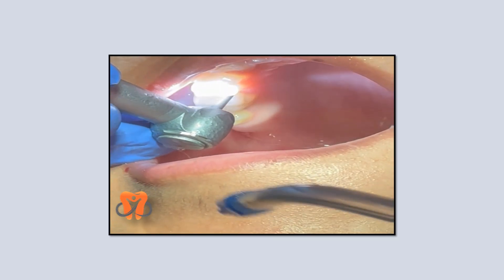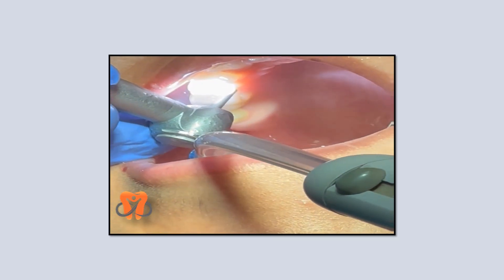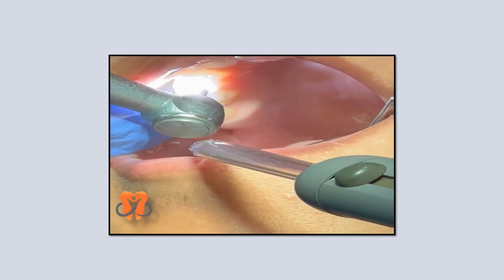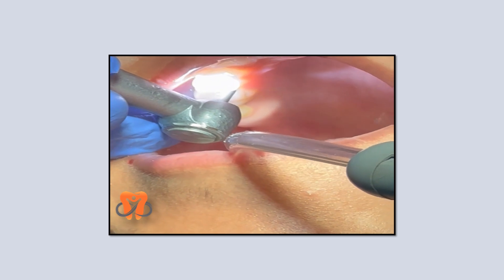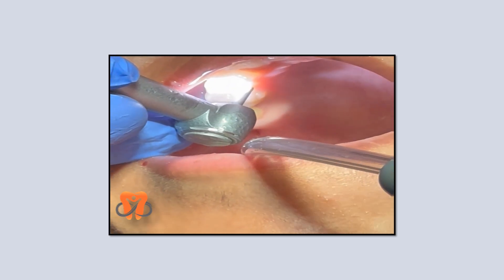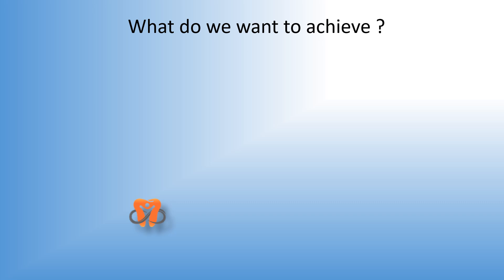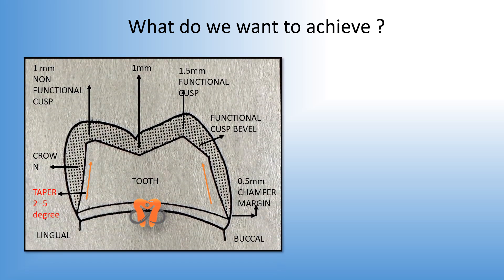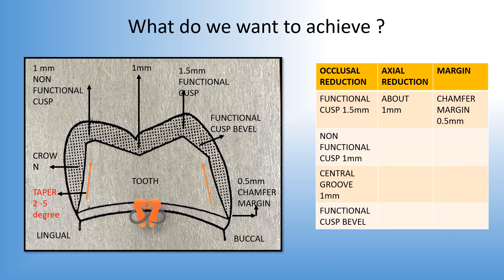The preparation of the tooth should be such that it should be a miniature form of the original tooth anatomy, along with some important features which are incorporated in it to improve its functioning. So what do we want to achieve? The final outcome of tooth preparation should be something like this — this is a molar with a metal crown in place, and the crown is cut in a systematic manner.